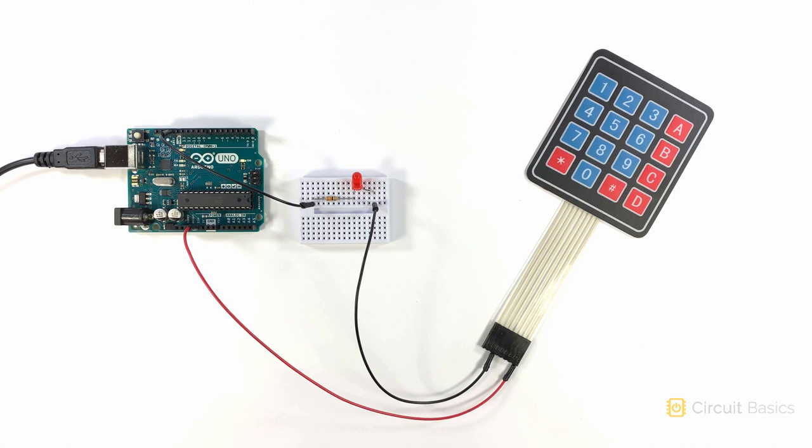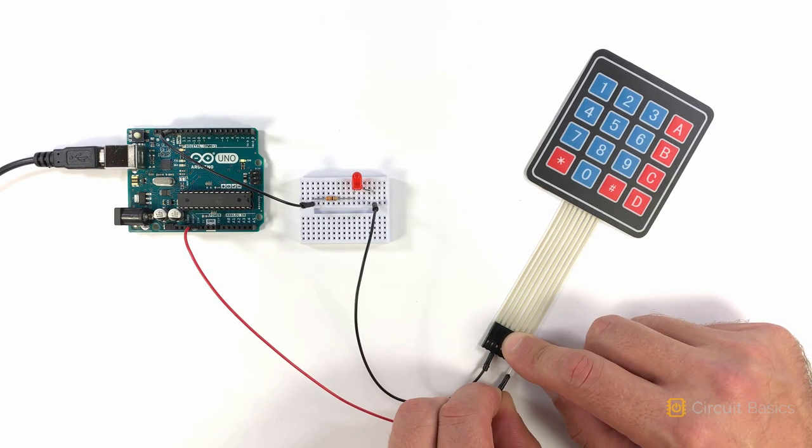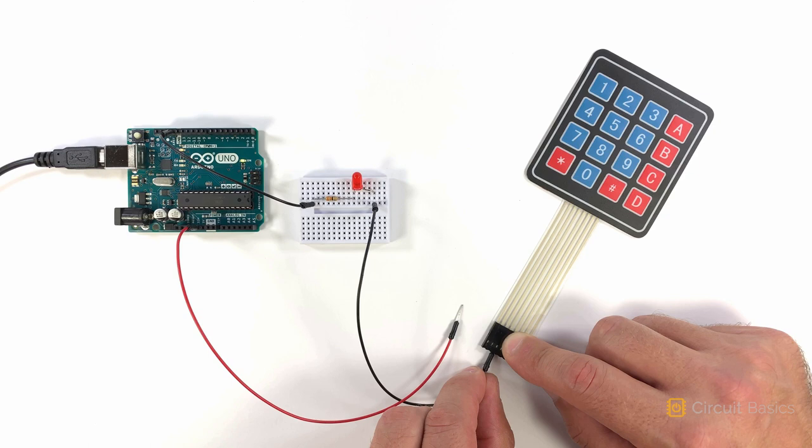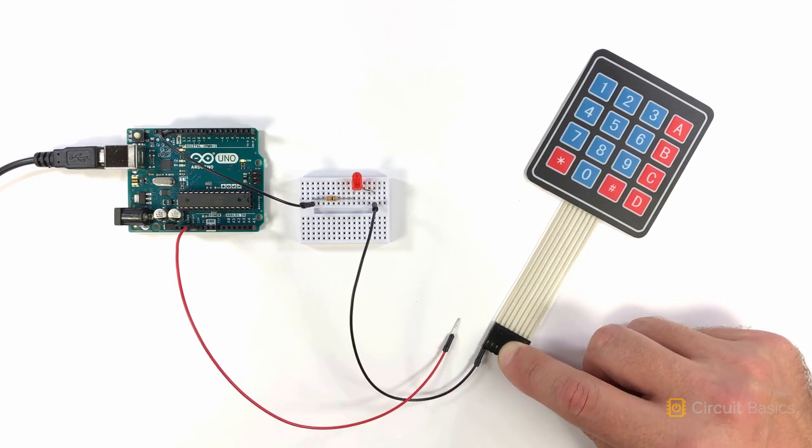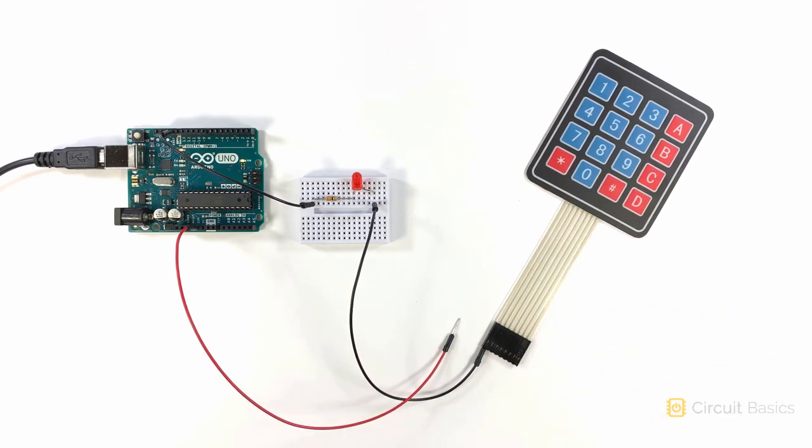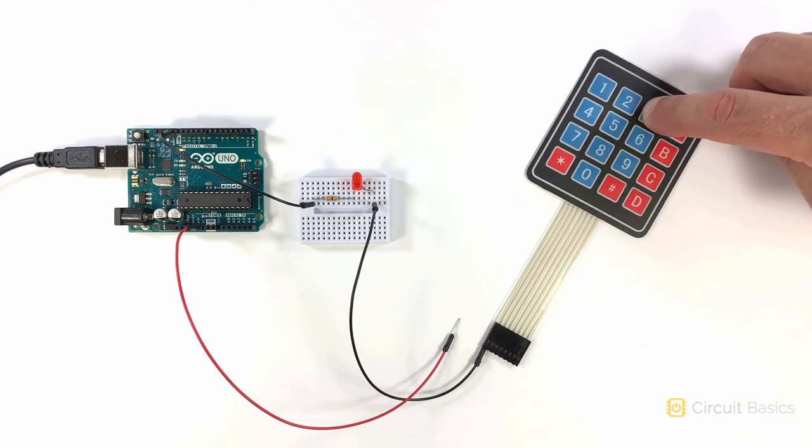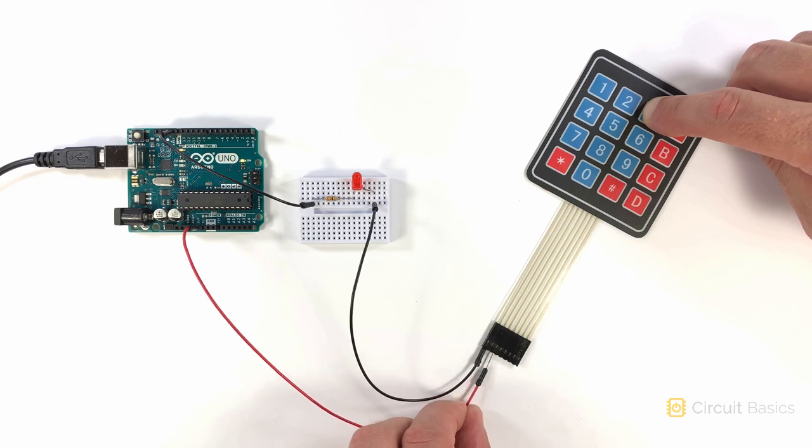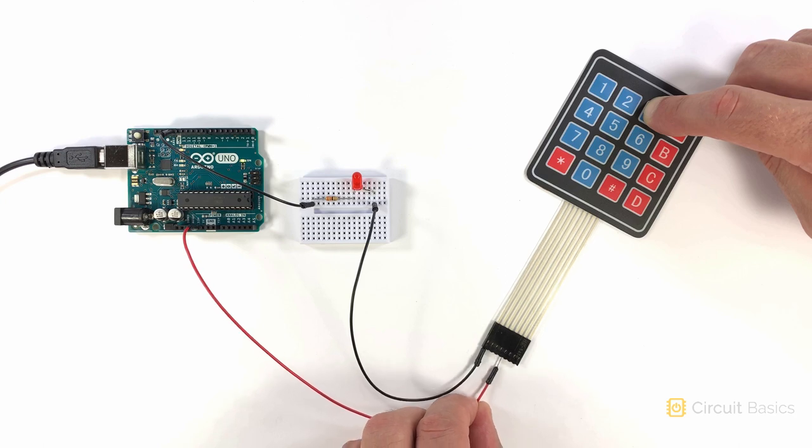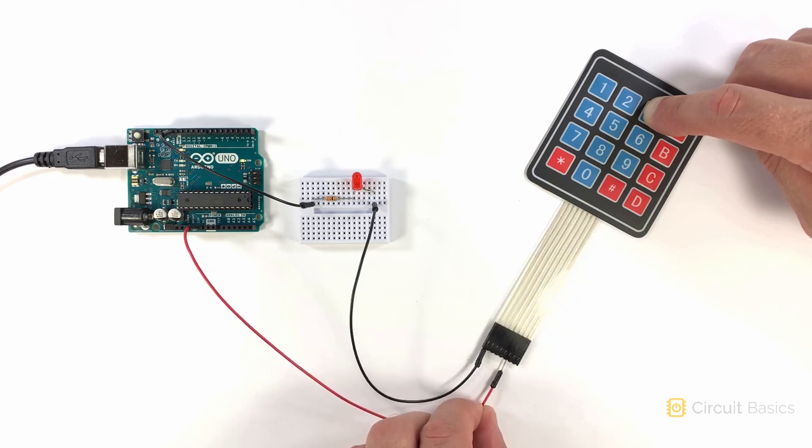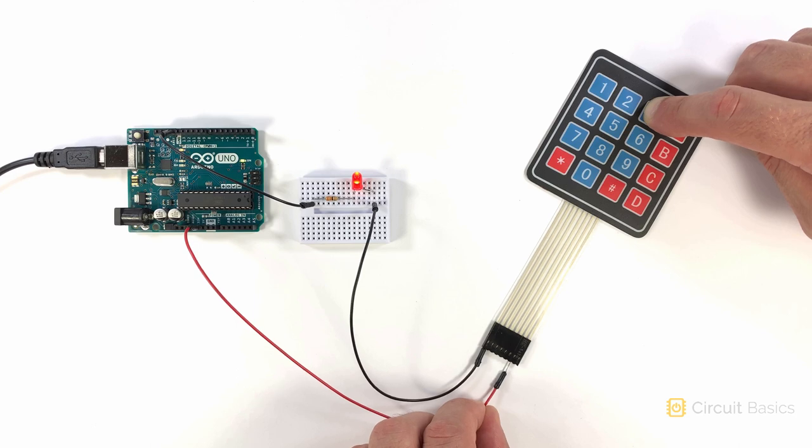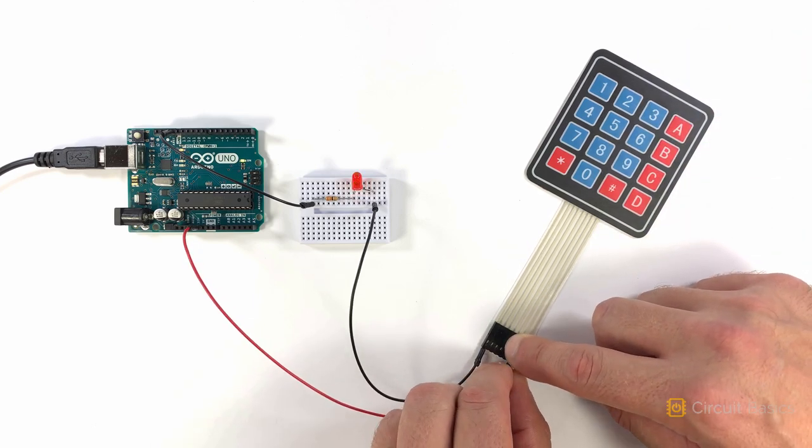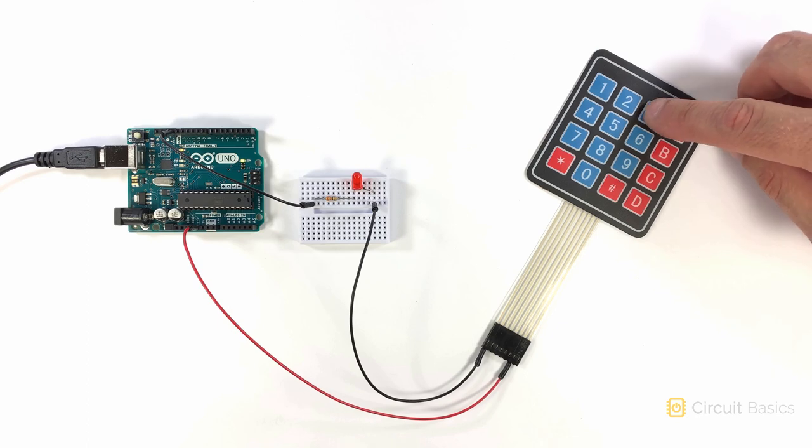Now we need to figure out which pins are connected to the columns. Insert the black wire into one of the row pins you found. I know this is the pin for row one, so I'll stick the black wire into it. Now press and hold one of the buttons in row one. Insert the red wire into the remaining pins until the LED lights up.